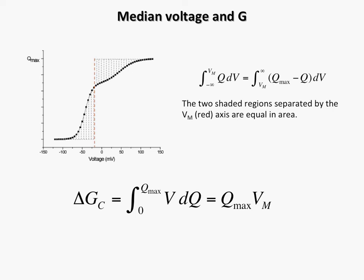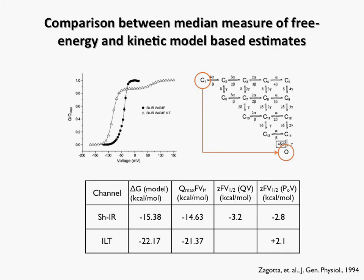We extracted the median voltage of activation for Shaker potassium channel and its ILT mutant which has a characteristic biphasic response in the QV curve. On comparing the median estimate of the free energy to that derived from the detailed kinetic models, we see that they are very close to each other. The Boltzmann fit measures derived from the PoV curves deviate massively from these estimates. Additionally, the biphasic response generated in the QV curve of the ILT mutant does not allow fitting of a simple Boltzmann equation to it.